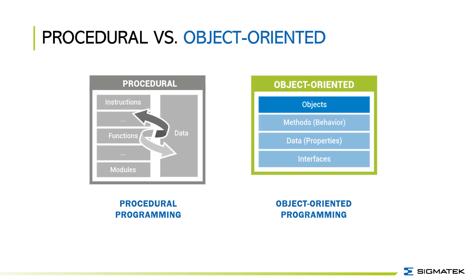The difference between procedural and object-oriented programming is as follows. For procedural programming, data and variables are managed separately from code. The lack of a definition of how the interaction between code and data takes place can lead to faulty programs. With object orientation, the major advantage is that code and data are combined into logical units and sealed off from the outside world, so that unwanted influence is ruled out.